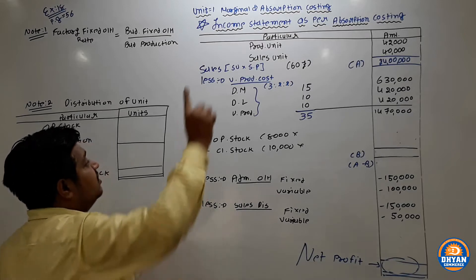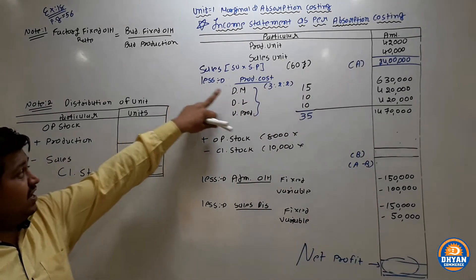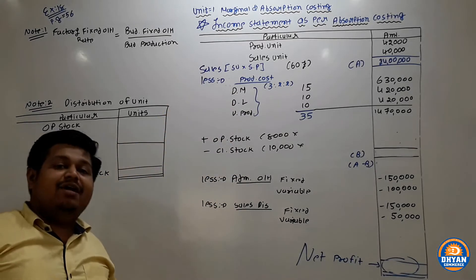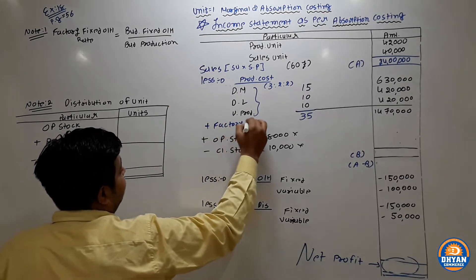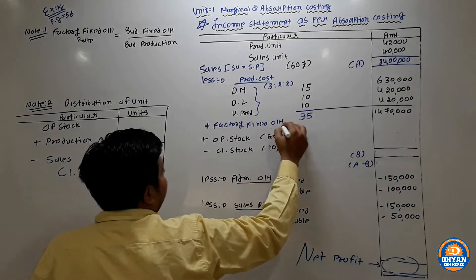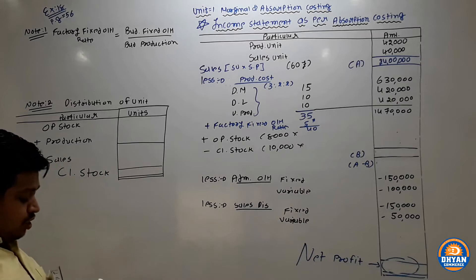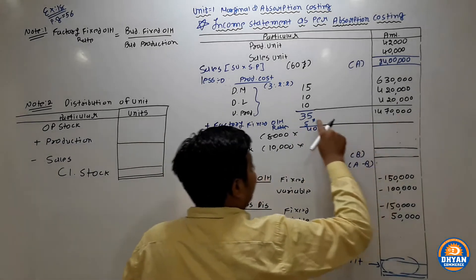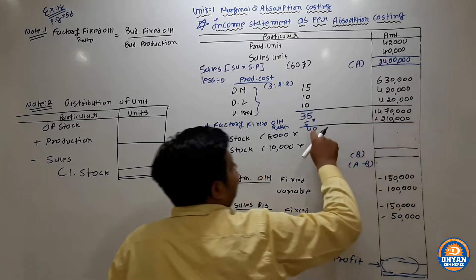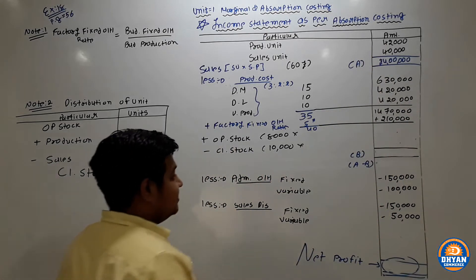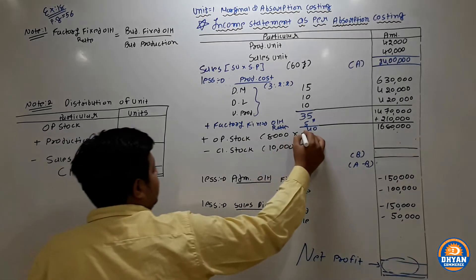In the absorption costing statement, production cost per unit is Rs. 40 (both variable and fixed). We add only factory fixed overhead as extra. Rate is Rs. 5 per unit, so 5 × 42,000 = Rs. 2,10,000. Total production cost: 40 × 42,000 = Rs. 16,80,000. Then opening stock value = 8,000 × 40 = Rs. 3,20,000 (plus), and closing stock = 10,000 × 40 = Rs. 4,00,000 (minus).